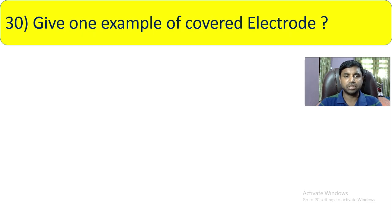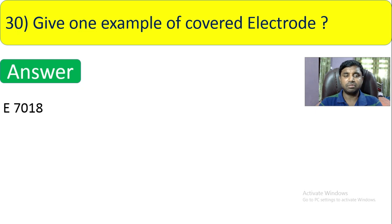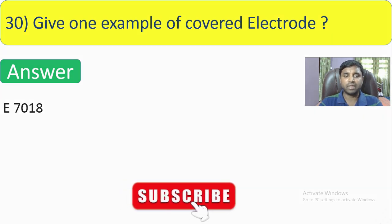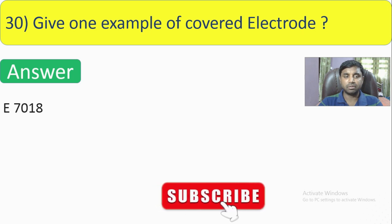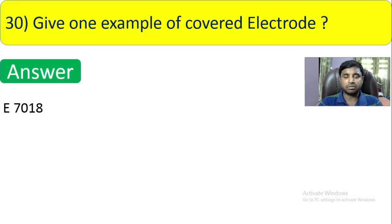Question number 30, the last question: Give one example of a covered electrode. The answer is E7018. A covered electrode has a flux covering around it — that flux covering is what makes it a covered electrode. So E7018 is the answer.